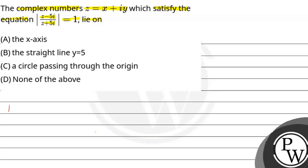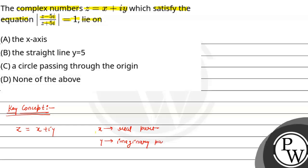Now let's see the key concept for the question. Suppose we have a complex number z which equals x plus iy. Here x is our real part and y is our imaginary part.